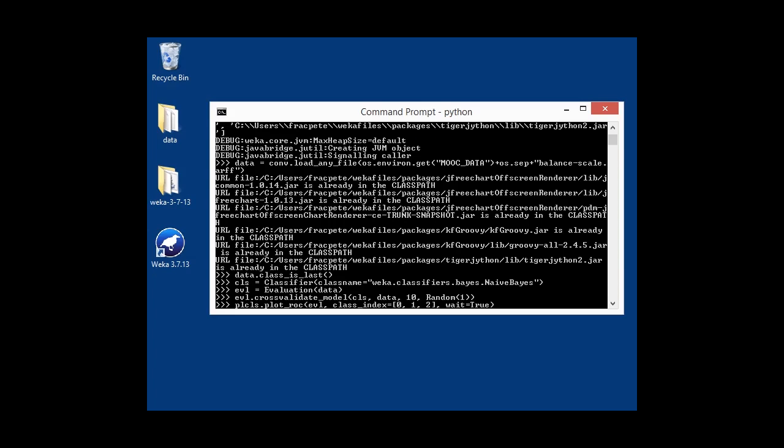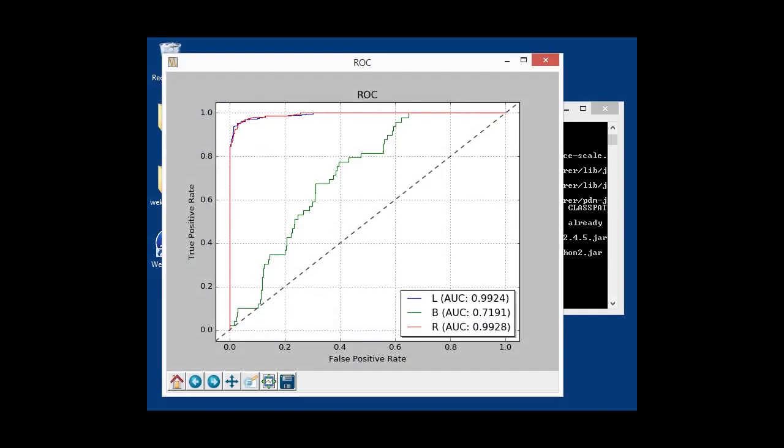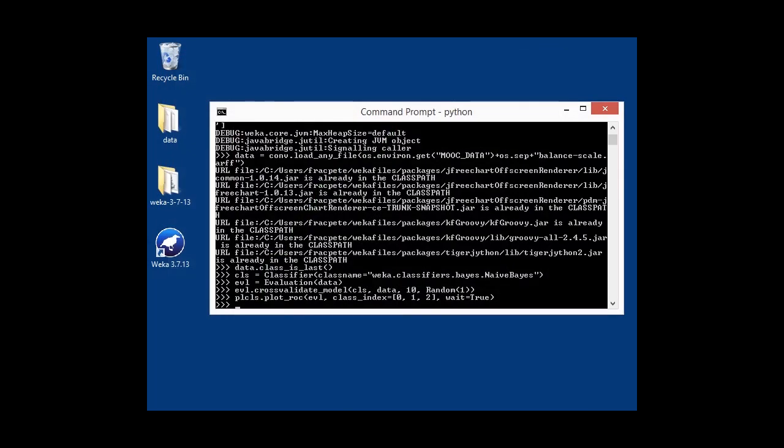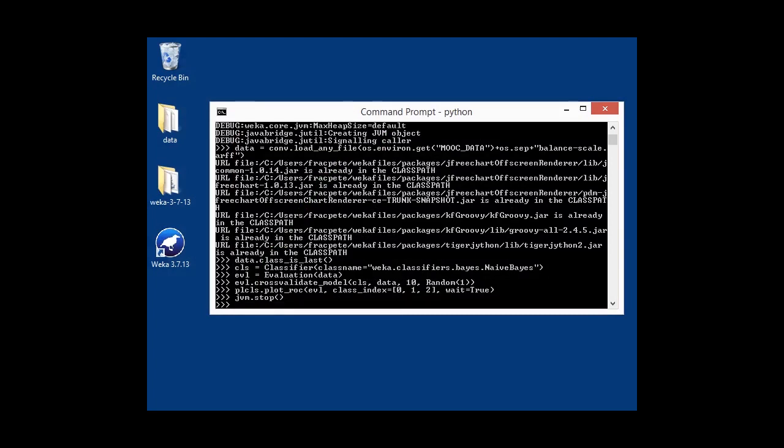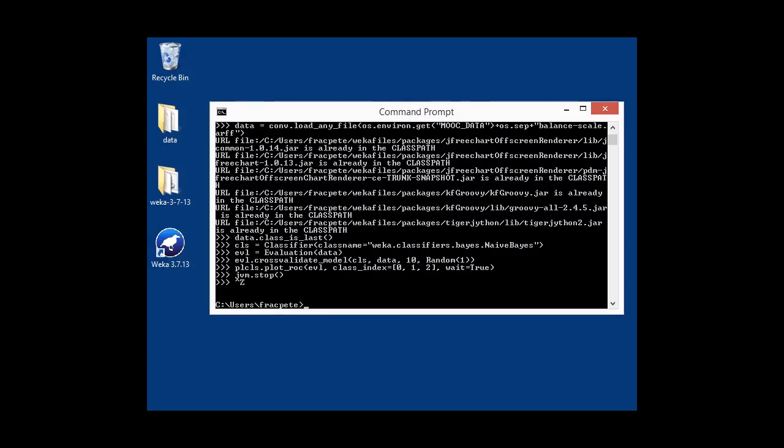And then we use the plot_roc method to plot everything. And we want to plot 0, 1, and 2 class label indices. And here we have those. Once again, we can see the AUC values for each of the labels, whether it's L, B, or R. And final step. Stopping the JVM again and exit.